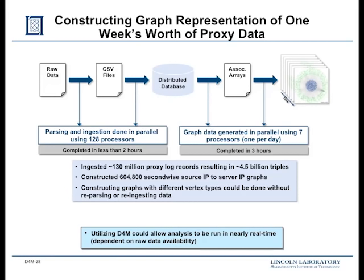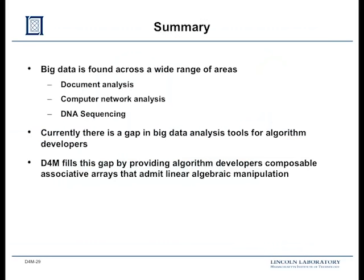That brings us to the end of the lecture. To summarize: big data of this type is found in a wide range of areas — document analysis, computer networks, DNA sequencing. There's a gap between the tools people traditionally use for these problems, and D4M fills this gap. With that, are there any questions before we get on to the examples?